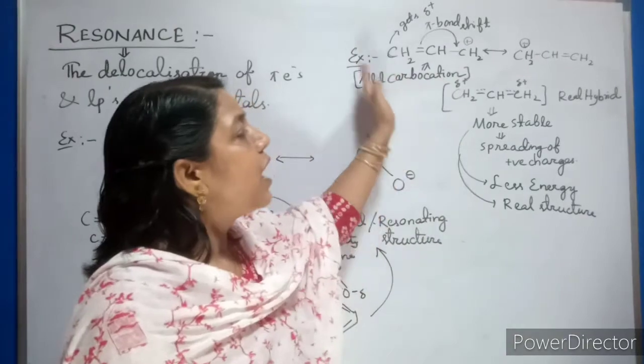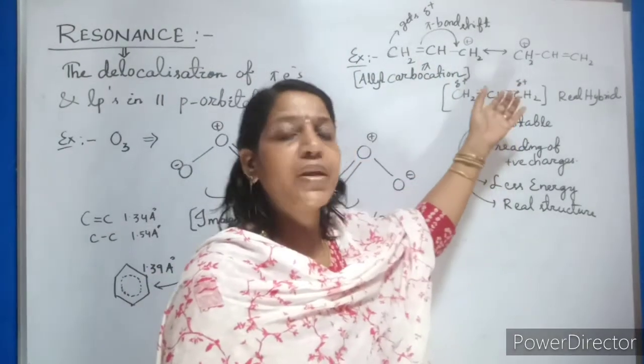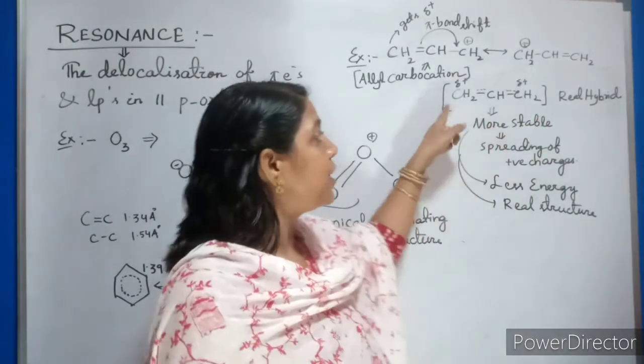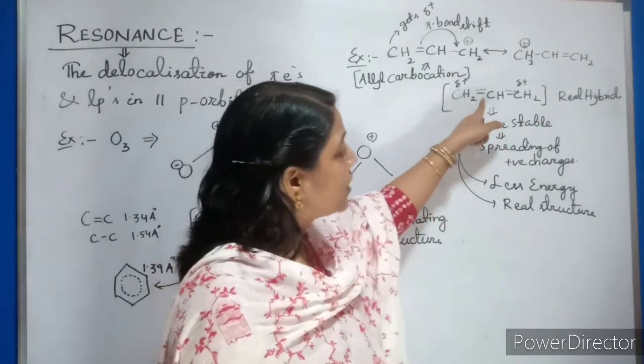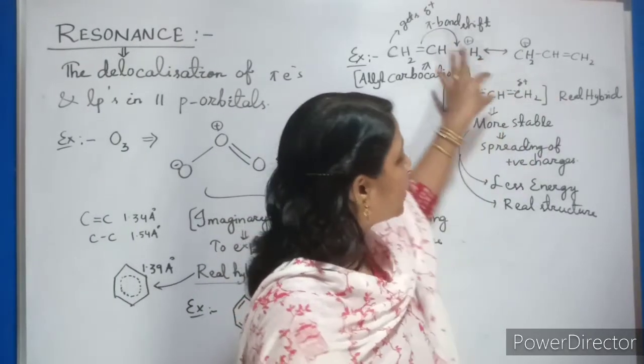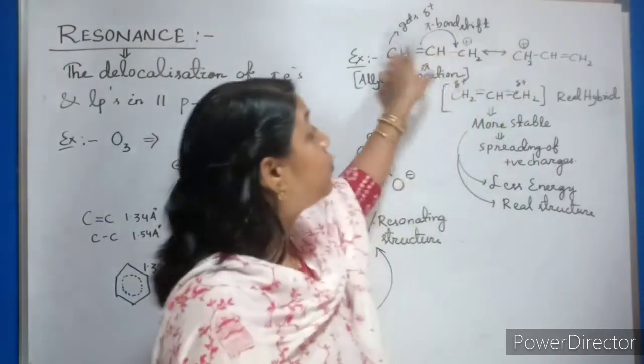But practically if you see, actually it is not happening. Practically this is called as real hybrid structure. What you will find? CH2 single bond CH single bond CH2 and we are putting these dot lines to show that because the bond length remains same in both the case.